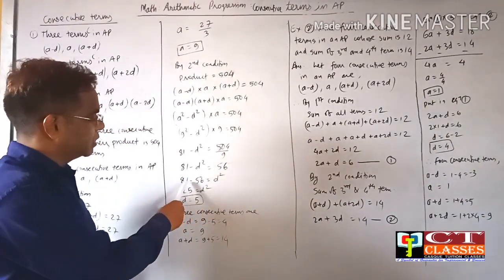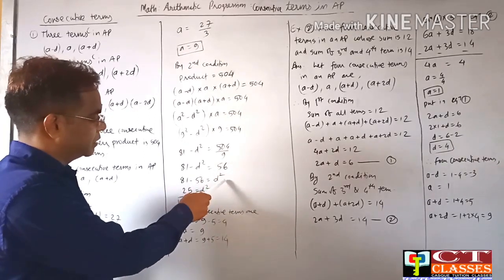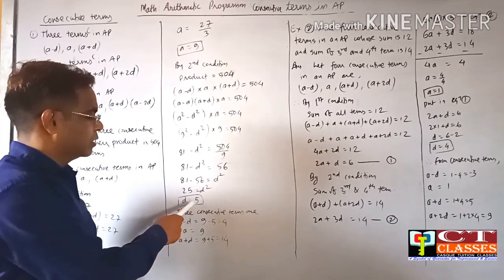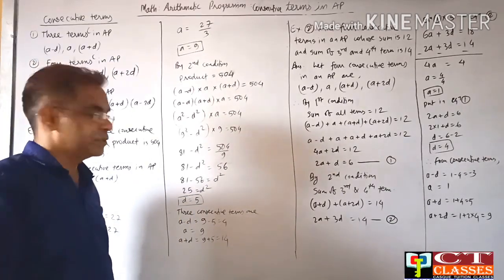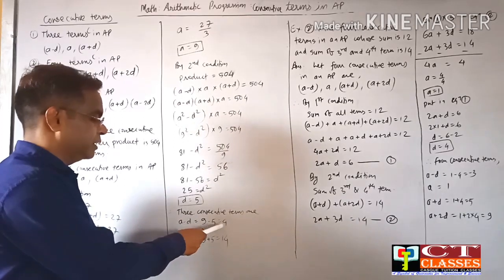Dividing: 504 ÷ 9 = 56. So 81-d² = 56, which gives d² = 25. Therefore d = 5.